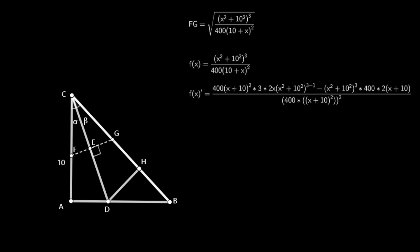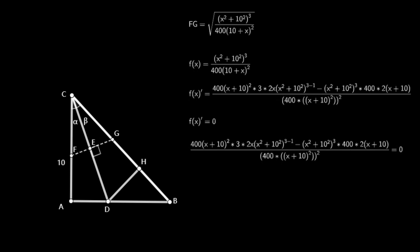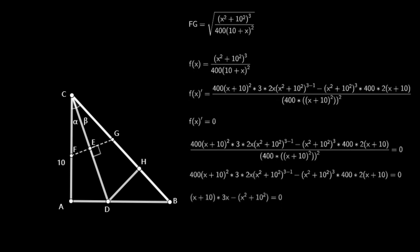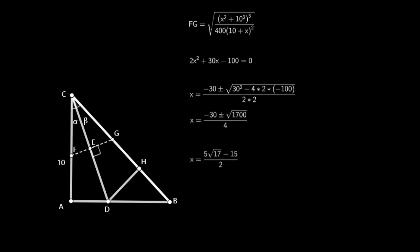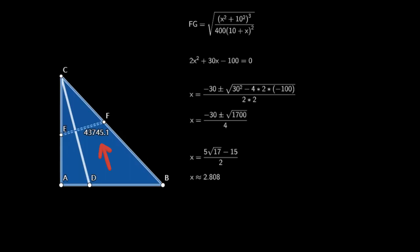We need to use derivatives here. If you haven't learned derivatives yet, keep passionate about math — you will learn it in the future. Setting the derivative F'(X) equal to zero finds the minimum. The simplified equation becomes (X + 10) times (3X) minus (X² + 10²) equals zero, yielding the quadratic: 2X² + 30X minus 100 equals zero. Solving gives X equal to 5 times the square root of 17 minus 15, all over 2, which is approximately 2.808. At this value, the minimum crease length is approximately 4.375.